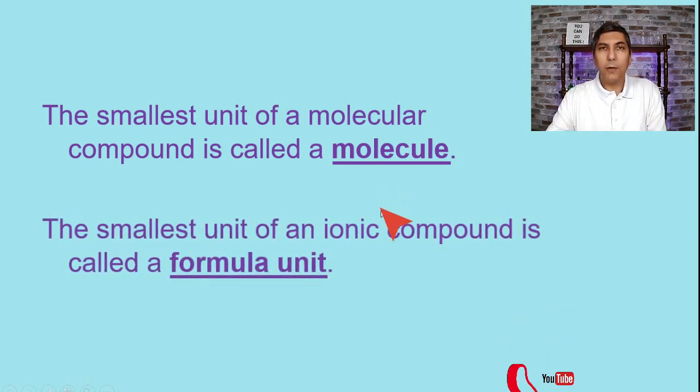Now on the other hand if we have an ionic compound, you know metal and non-metal formed from an ionic bond, the smallest unit of an ionic compound that retains the properties of that substance is called a formula unit. So we have molecules for molecular compounds or covalent compounds and formula units for ionic compounds.